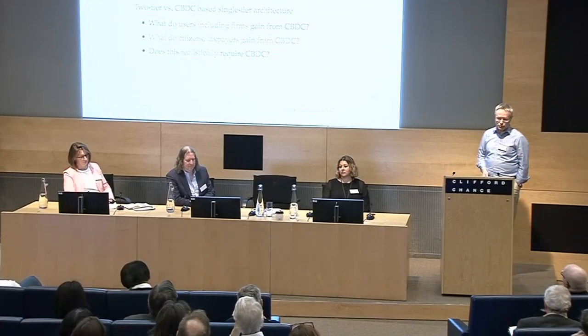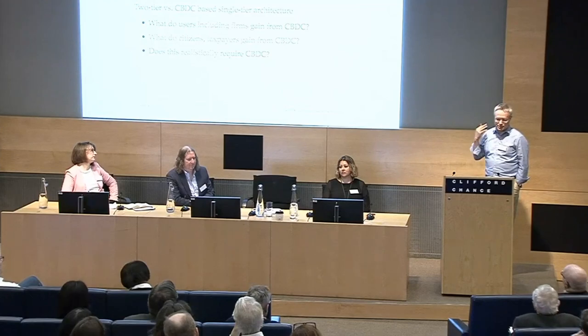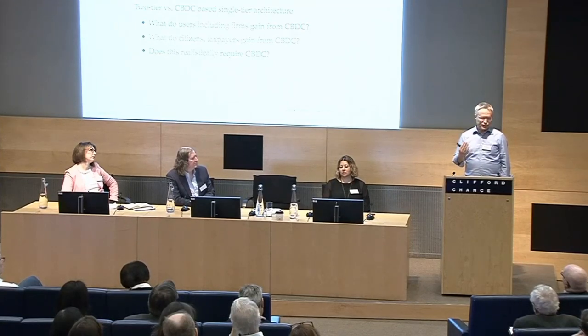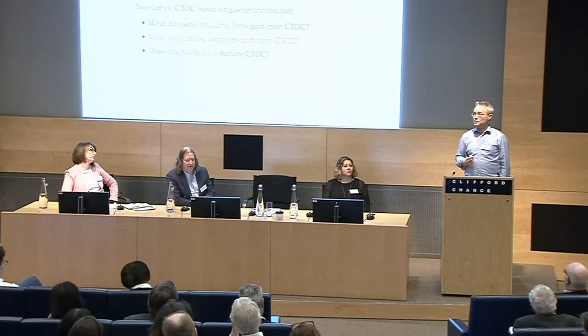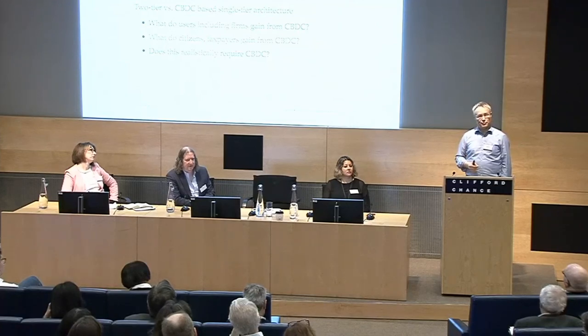If you want to think about retail CBDC from a macroeconomic perspective, the question to ask yourself is: what is the better architecture to efficiently provide liquidity to the real economy? Do you want a single-tier system in which consumers and firms use means of payment issued by the government? Or do you want the current two-tier system, which comes with fractional reserve banking and all the known issues?